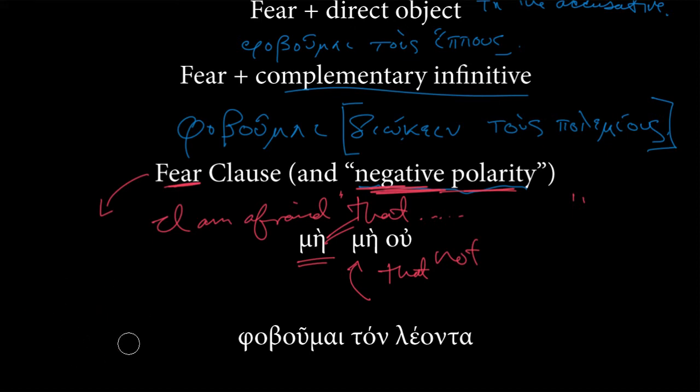This phrase has what linguists will call a negative polarity. So to say no in Greek, you don't just say μή for a fear clause. Because you're afraid that something will happen. So that is actually μή here. And if you want to say that not in Greek, you're going to use μή οὐ. So this is kind of paradoxical, right?